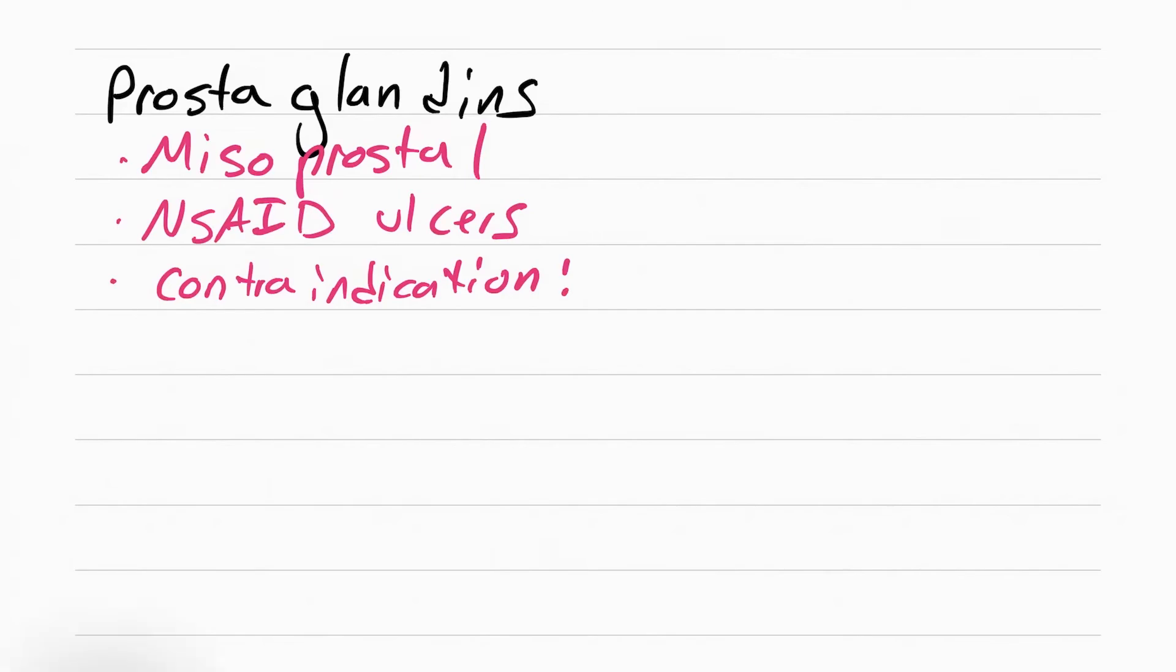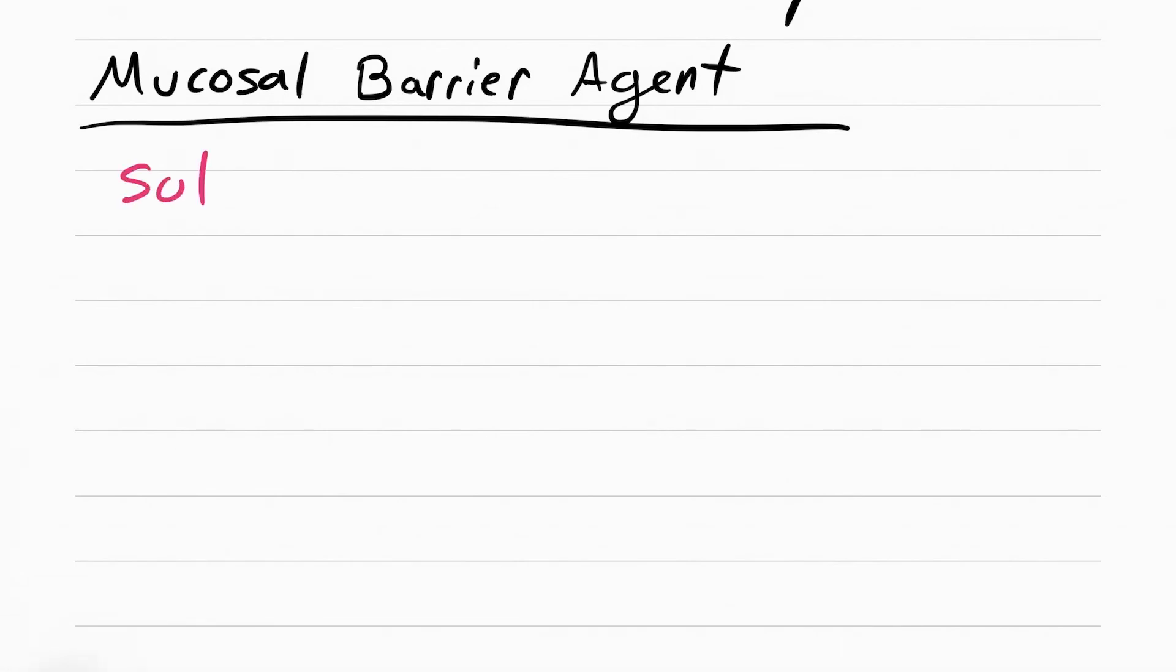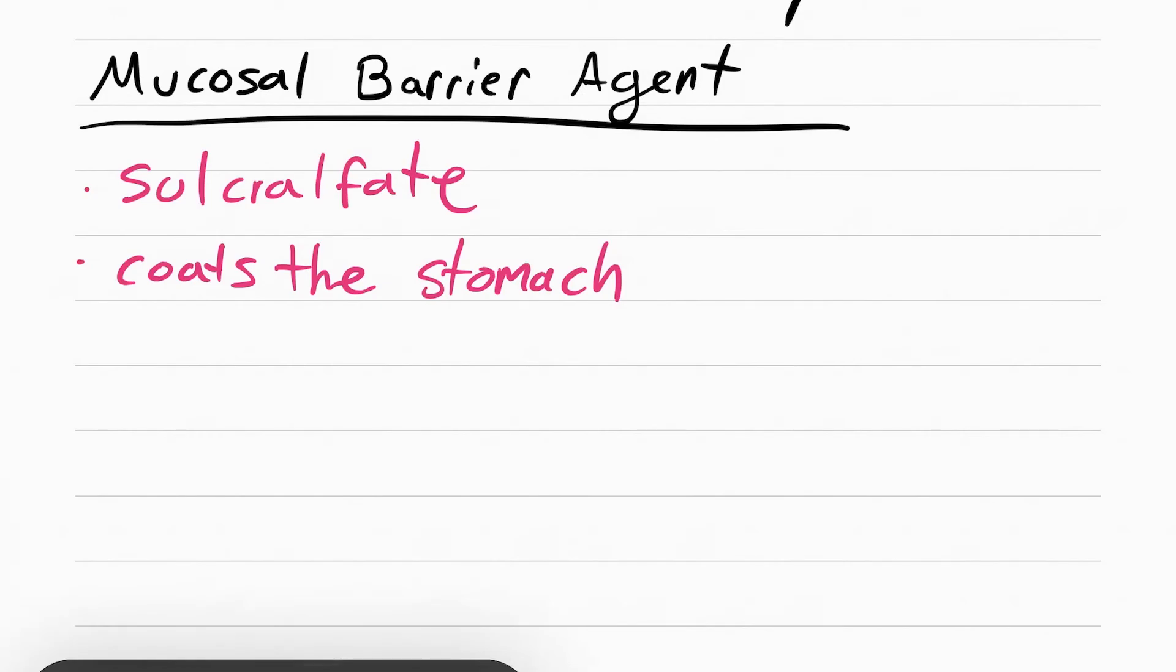The next class of drugs to help with ulcers is called prostaglandins. This includes misoprostol. This is for NSAID ulcers. There's a big contraindication to this, and it's pregnancy. If you remember from OB, misoprostol has another name. It's called Cytotec, and it can be used as an abortion pill. The next class of drugs is called mucosal barrier agents. This includes sucralfate. The purpose of this drug is to coat the stomach to protect it from the acid. You have to make sure you teach the patient to take this one hour before meals and drugs.